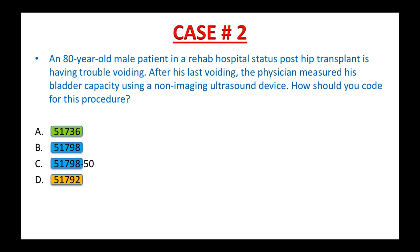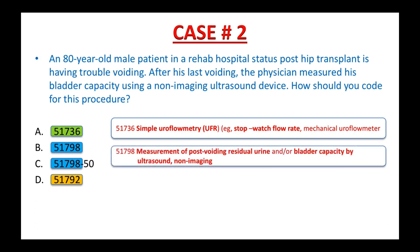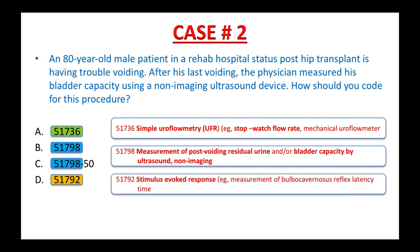Here's what you find. CPT 51736: simple uroflowmetry (UFR), for example stopwatch flow rate or mechanical uroflow meter — please highlight the main term. CPT 51798: measurement of post-void residual urine and/or bladder capacity by ultrasound, non-imaging — highlight the main terms and keywords for this code. CPT 51792: stimulus evoked response — measurement of bulbocavernosus reflex latency times — the main term is also highlighted. After highlighting the main terms, you should know the key difference between each CPT code. Now is the time to read the procedure report.